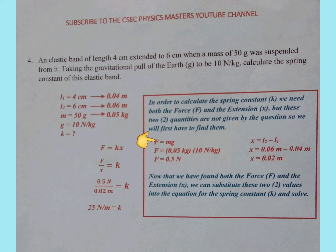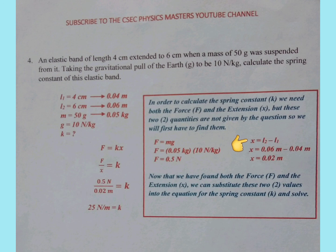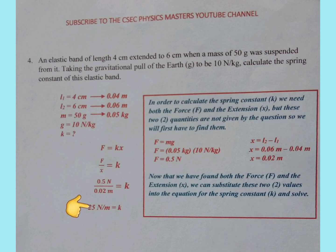We use the formula force is equal to mass times gravity, where the mass is 0.05 kilograms and the gravity is 10. That ultimately gives us force is equal to 0.5 Newtons. We also have to find the extension. We have been given L1 and L2, so extension X equals L2 minus L1, which ultimately works out to be 0.02 meters. Now that we have the force and have also calculated the extension, we substitute these two values back into the equation for K. K equals 0.5 Newtons divided by 0.02 meters, which ultimately works out to be 25 Newtons per meter.